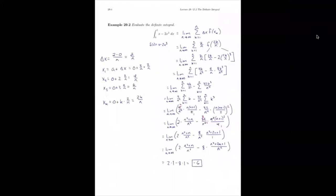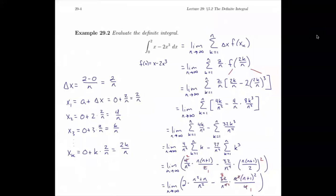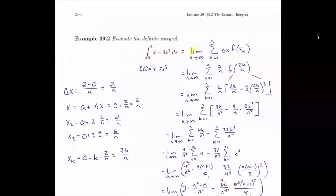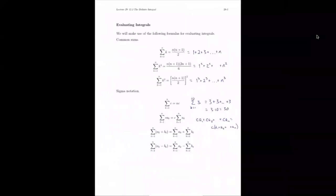Now let's use these tools to evaluate the given definite integral — the integral from 0 to 2 of x minus 2x cubed with respect to x. We want to know the area underneath this curve from 0 to 2. We know this equals the limit as n approaches infinity of the sum from k equals 1 to n of delta x times f of x_k. We write that down right away, understanding we'll fill in the details.